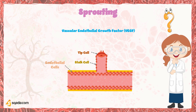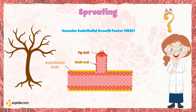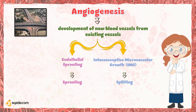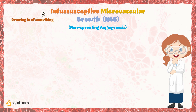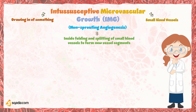This is comparable to the growth of branches on a tree — just as a tree extends its branches to reach new areas and access more resources. Now, the other mechanism is intussusceptive microvascular growth — the name is a bit difficult, isn't it? We can also refer to it as non-sprouting angiogenesis. The word 'intussusceptive' means drawing in of something, and 'microvascular' refers to small-sized vessels. So the term literally means the inside folding and splitting of small blood vessels to form new vessel segments.